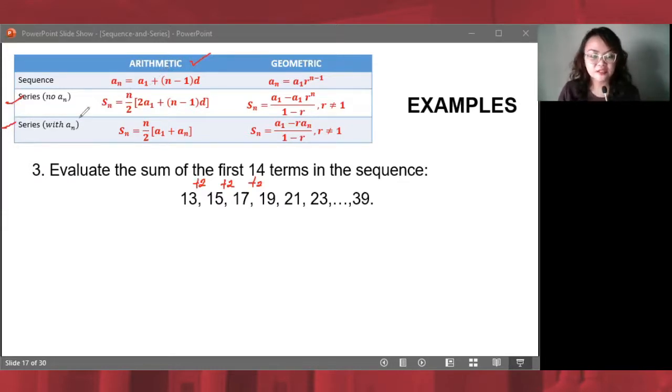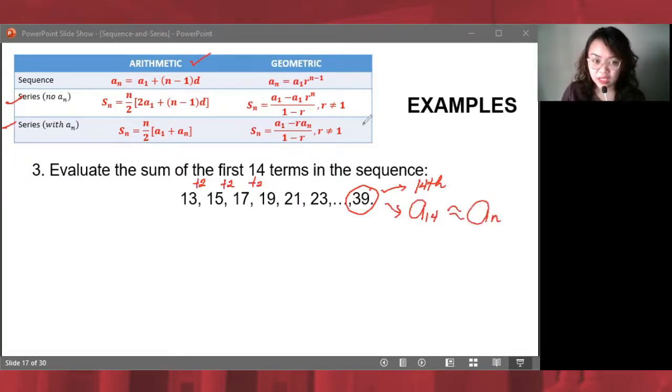Next, let's identify whether to use the first formula or the second formula. We have our sequence ending at 39. Unlike the previous example in example number 2, which ended in an ellipsis, this one gave the last term. It is safe to assume that this is the 14th term. Therefore, this is a₁₄, which in our formula is translated as aₙ. Ibig sabihin, ang gagamitin po natin ay second formula.